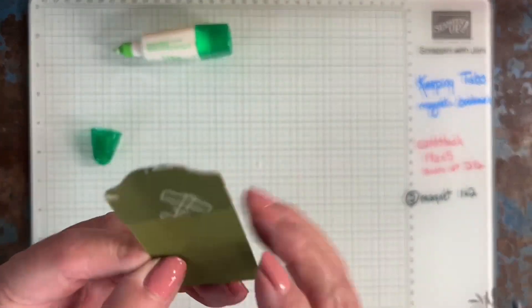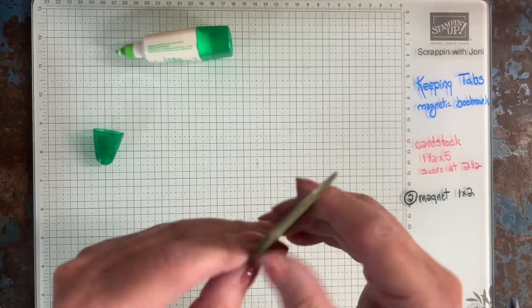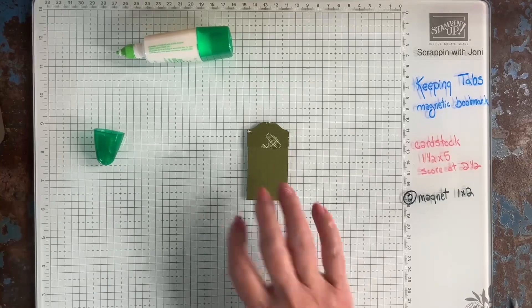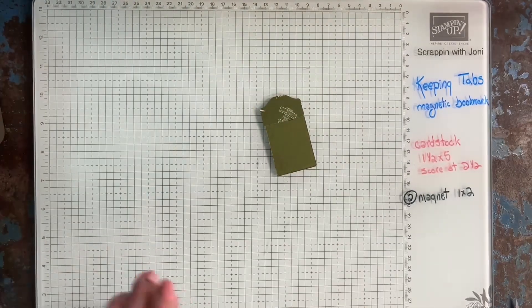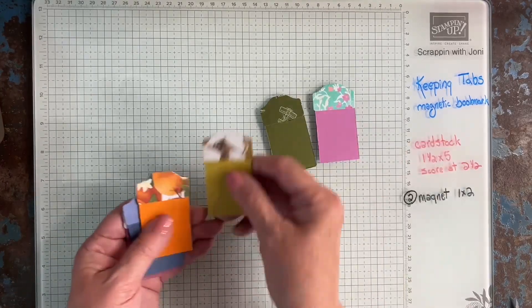Now you could go fancy on me. You could add another strip of paper down here. You could put your name here so no one takes your bookmark. But look how different they look depending on what you use for paper, cardstock, and print. Look at them.